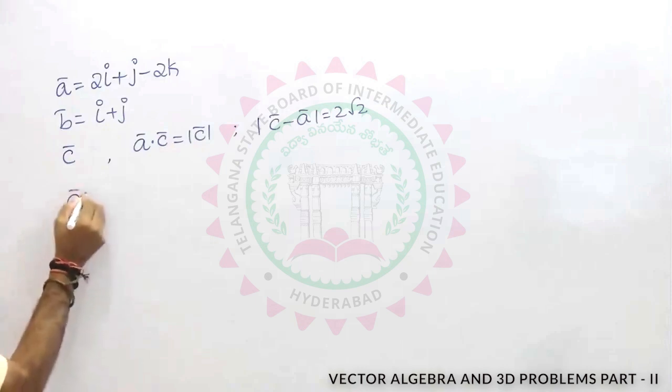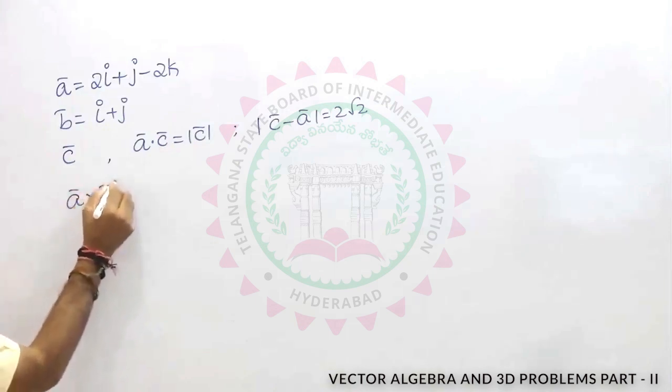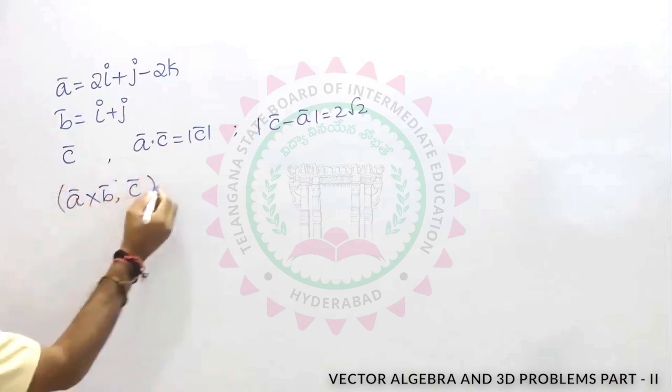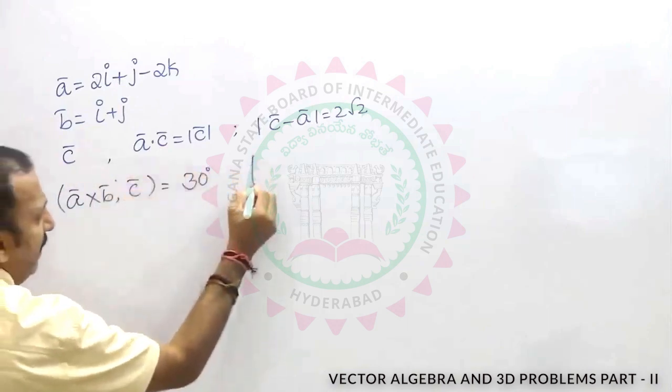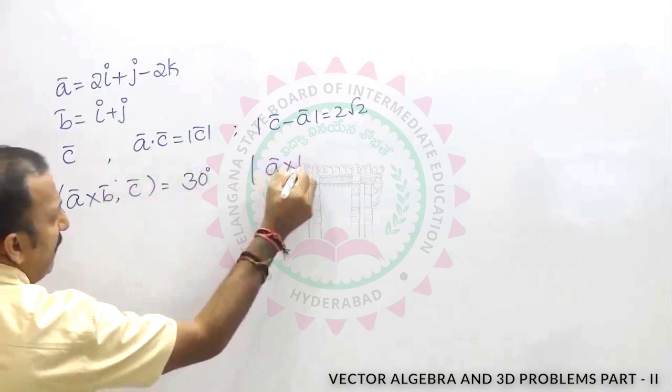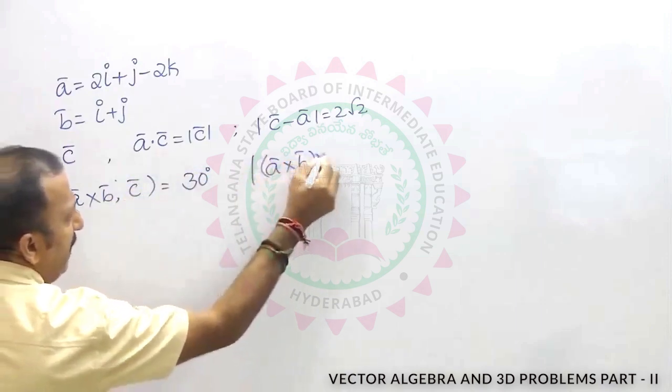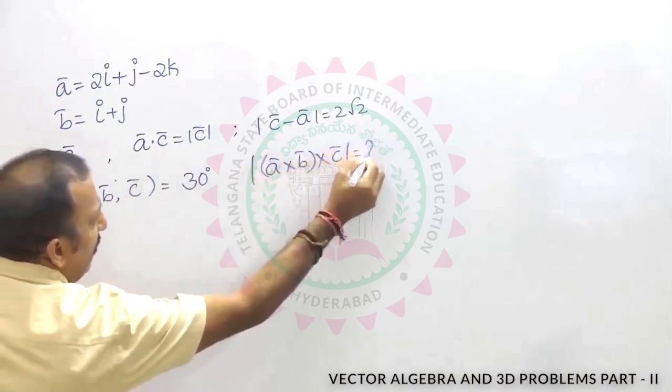If angle between a cross b and c bar is 30 degrees, then modulus of a cross b cross c is equal to dash.